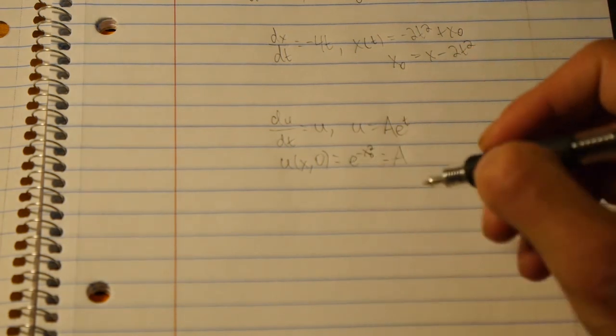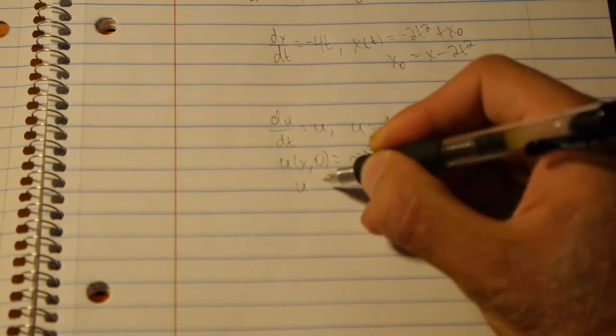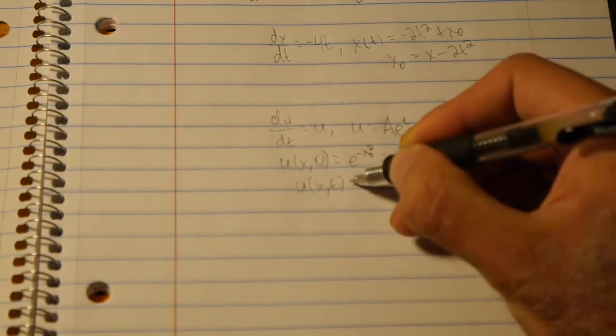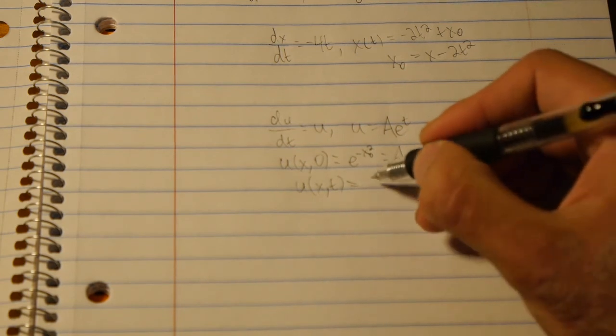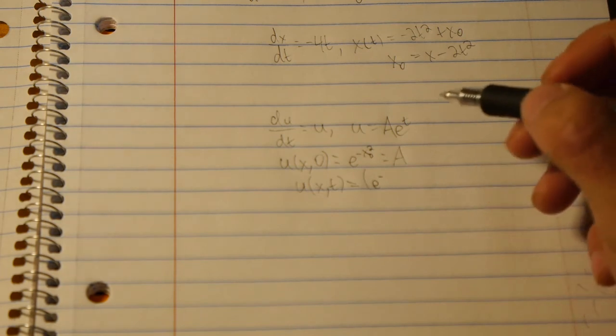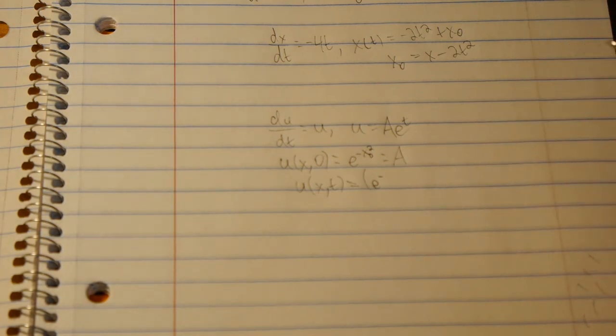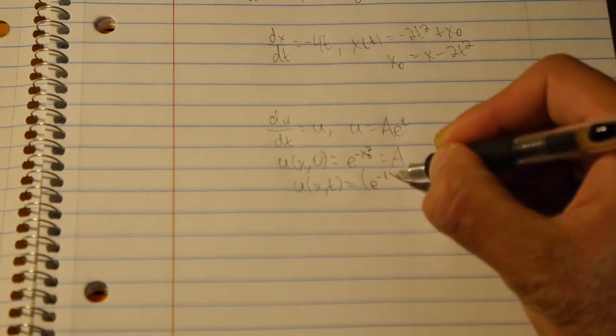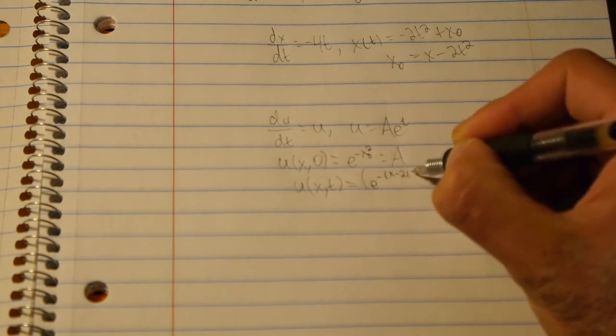So now we can just rearrange and plug in. So we say u(x,t) is equal to e to the negative, x naught is equal to x minus 2t squared. So e to the negative (x minus 2t squared) squared.